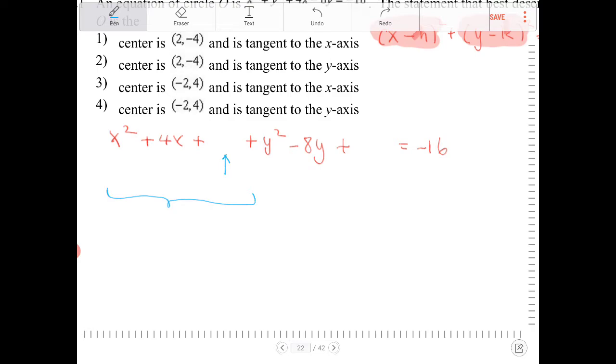So anyway, we half the middle coefficient, square it, and that will give us 4. Because 4 divided by 2 is 2, and when we square that, it's 4. We're going to do the same thing with the middle coefficient involving the y variables. We're going to half it, so 8 divided by 2 is 4. 4 squared is 16, so we're going to add 16 over here.